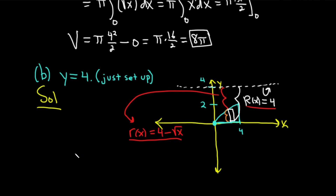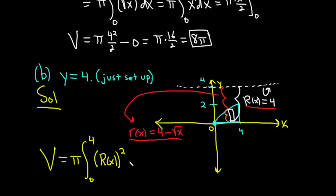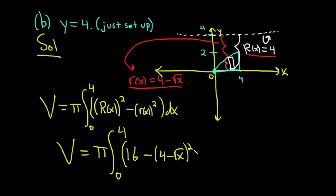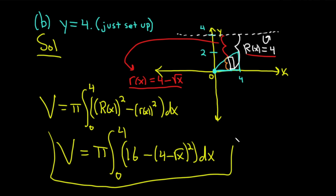Now that we have little r and big R, we can write down the formula for the volume. The volume equals pi times the integral from 0 to 4 — we're integrating with respect to x — of big R of x squared minus little r of x squared dx. Plugging everything in: pi times the integral from 0 to 4 of 4 squared, which is 16, minus the quantity 4 minus the square root of x squared dx. This is the volume of the solid generated by rotating the region about the line y equals 4.